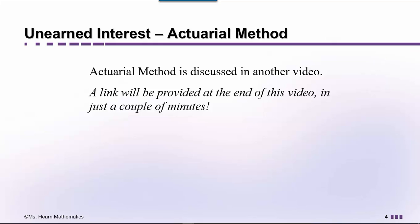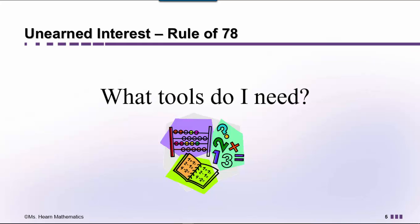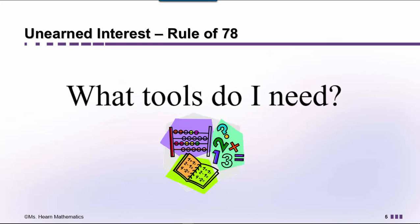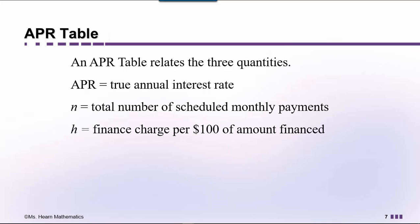You might be wondering, what tools do I actually need to do this calculation? There are three tools that you will need. First, an APR table. An APR table is a list of values — it relates the APR to the total number of scheduled monthly payments, which we represent as N, and the finance charge per $100 financed, which we call H. An APR table looks something like this.